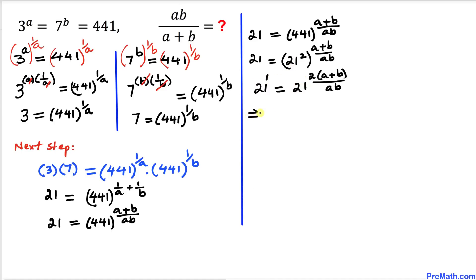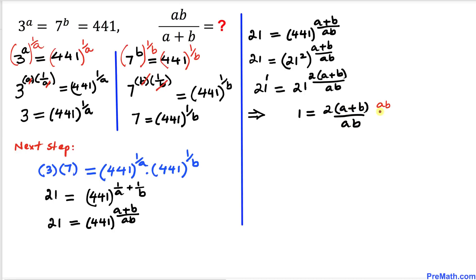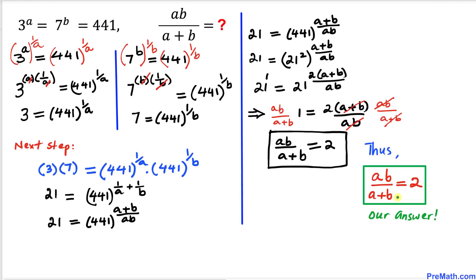So we write 1 = 2(a+b)/ab. Rearranging, we multiply both sides by ab and divide by 2(a+b), so ab/(a+b) equals 1/2 × ab... that is, ab over (a+b) = 1/2. Wait — solving directly: 1 = 2(a+b)/ab means ab/(a+b) = 2. So a times b divided by a plus b equals simply 2.